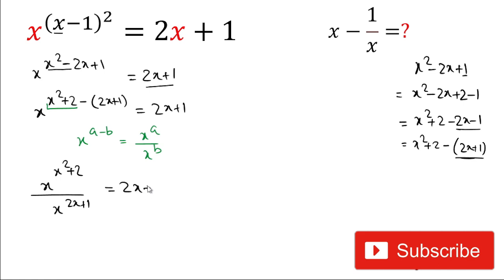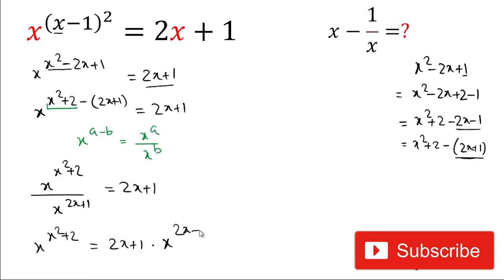Now we cross-multiply and we get: x to the power (x²+2) equals (2x+1) multiplied by x to the power (2x+1). Here the power was in minus before; now after cross-multiplying it is in plus.